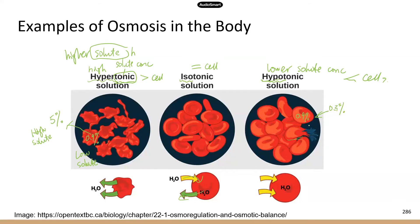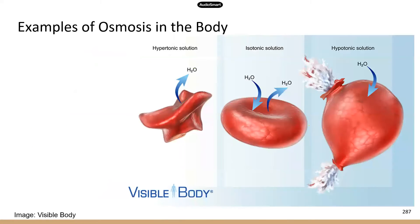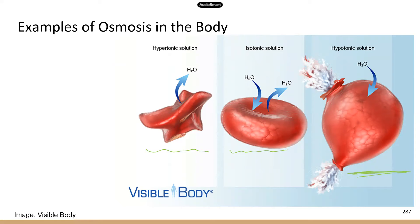This is what happens to cells when you put them in different solutions with different tonicities. In the realistic pictures included, you can see what cells look like when they shrivel up — really wrinkled and much smaller. This is the normal shape for red blood cells. And this is what happens when cells explode because too much water moves in.